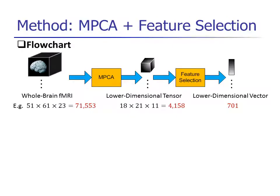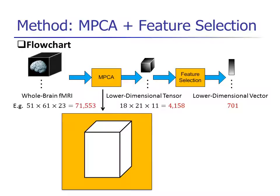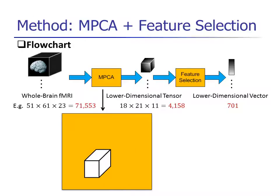We learn features in two steps, with MPCA-based feature extraction followed by feature selection. In the first step, MPCA learns low-dimensional tensor features directly from the 3D whole brain fMRI. This is done by estimating three projection matrices to reduce the dimension in the first mode, the second mode, and the third mode respectively.